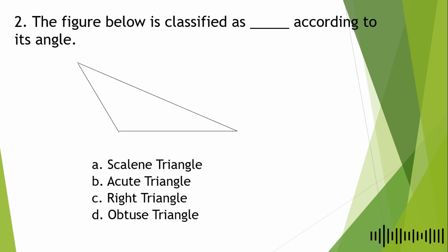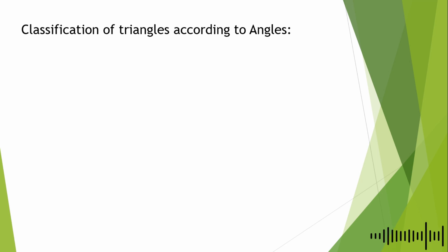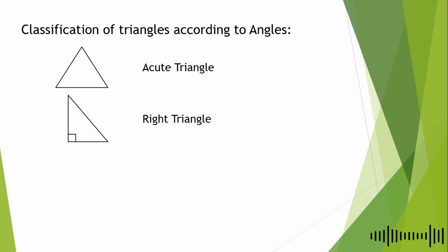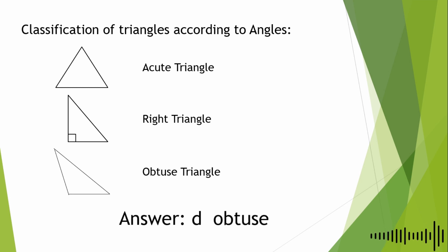The next question is: the figure below is classified as blank according to its angle. A. Scalene Triangle, B. Acute Triangle, C. Right Triangle, and D. Obtuse Triangle. An Obtuse Triangle has a measure of more than 90 degrees but less than 180 degrees. So according to this, the answer is D. Obtuse.